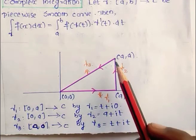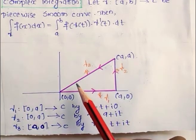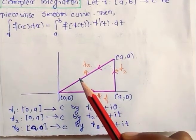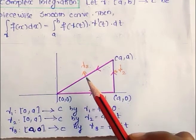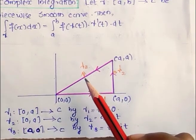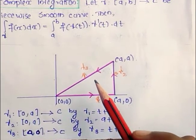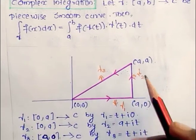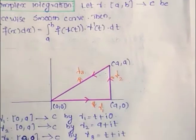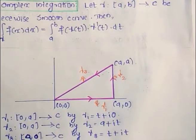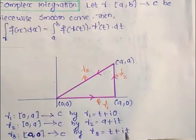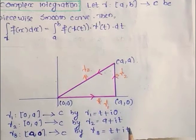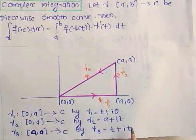Consider the third line gamma 3, which is the line y = x. Here both x and y coordinates are varying. So the parametric equation of gamma 3 is: gamma 3 maps [a, 0] to z, by gamma 3(t) = t + it.